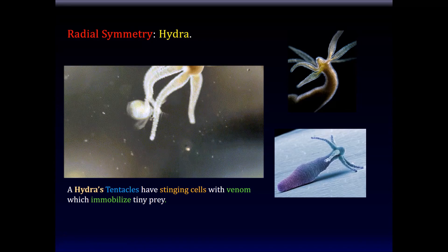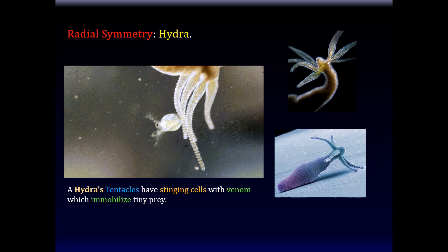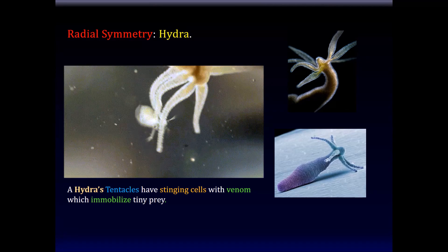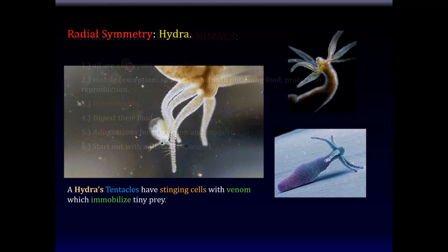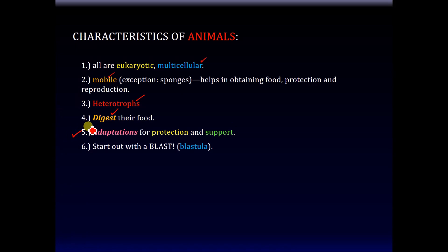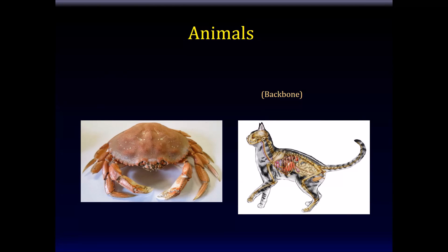Here is a living thing with radial symmetry — the hydra. Hydra has tentacles with stinging cells that have venom to immobilize their prey, and then the hydra eats it. To summarize, all animals are eukaryotic multicellular living things; they are mobile except for sponges, which are sessile; they are heterotrophs relying on other living things for food, which also implies some form of digestive tract. Animals also demonstrate adaptations for protection and support.